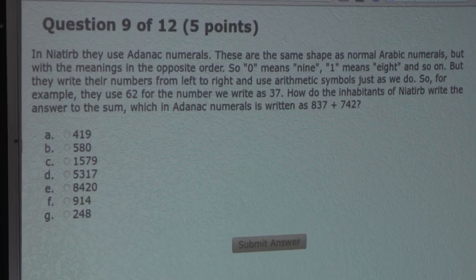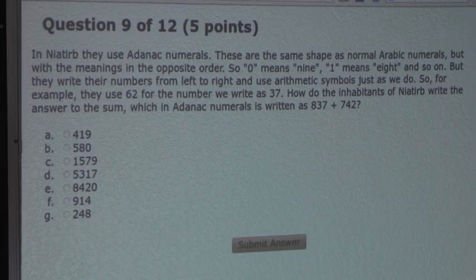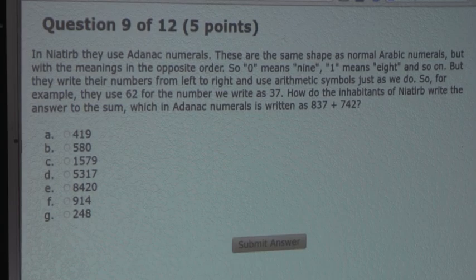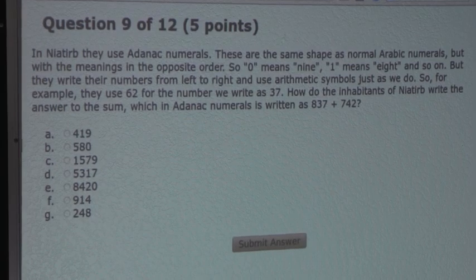So for example, they use 62 for the number we write as 37. How do the inhabitants of Neoterp write the answer to the sum, which in Adenac numerals is written as 837 plus 742?